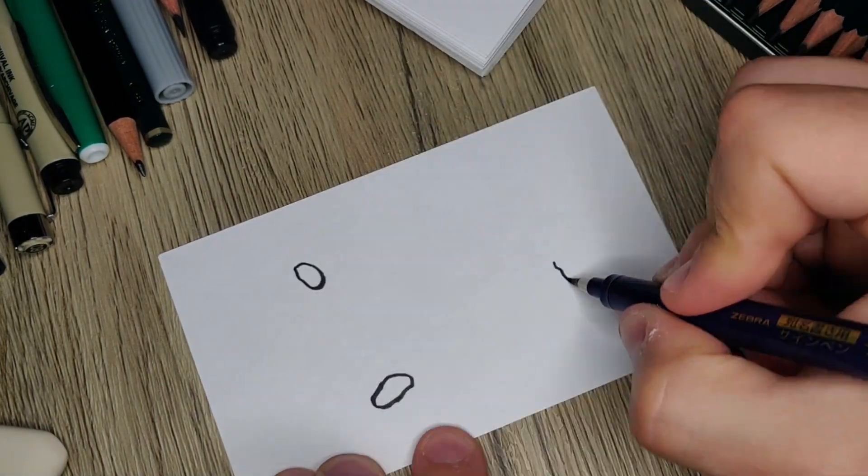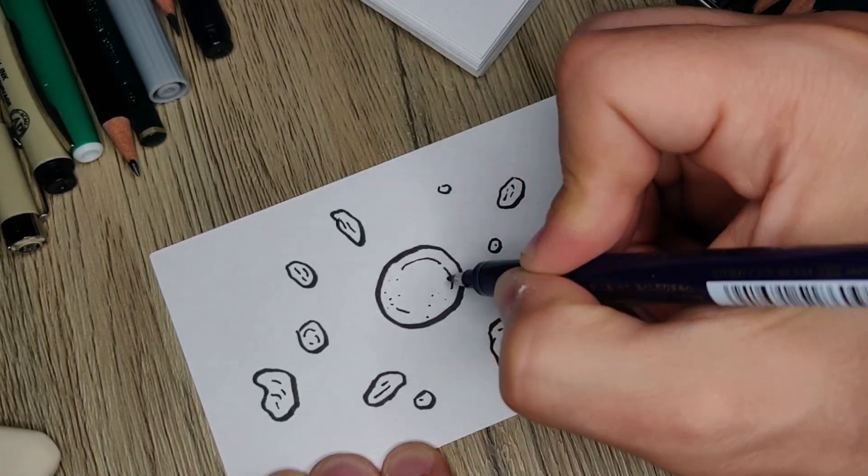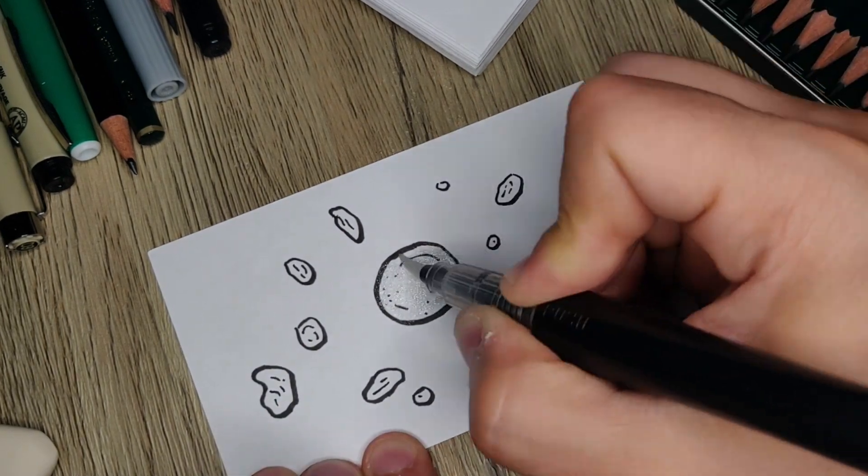Pearls are spheroidal lumps of calcium, which are, for some reason, highly valued by humans, possibly due to their slightly shiny appearance.